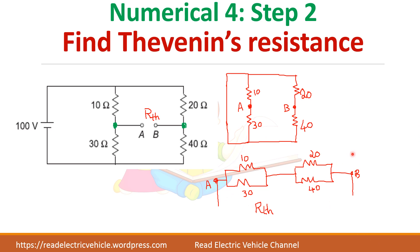So now the circuit is very simple. 10 and 30 are in parallel, and 20 and 40 are in parallel. For a Wheatstone bridge: whenever you get this type of problem, remember — to find the resistance across A and B at the center point, always parallel 10 and 30, then 20 and 40, and that combination is in series.